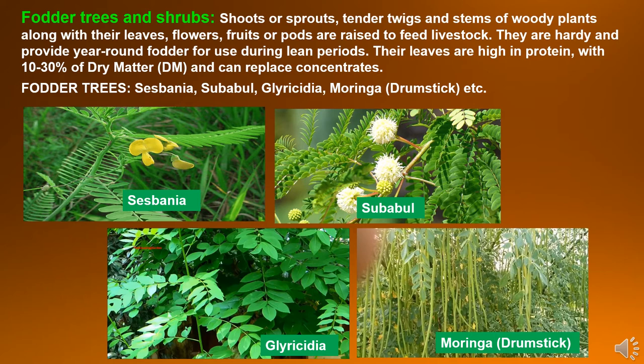Fodder trees and shrubs: shoots or sprouts, tender twigs and stems of woody plants along with their leaves, flowers, fruits or pods are raised to feed livestock. They are hardy and provide year-round fodder for use during lean periods. Their leaves are high in protein with 10-30% of dry matter and can replace concentrates. Fodder tree examples include sesbania, subabul, glyricidia and moringa which is called drumstick.